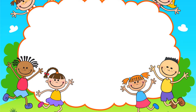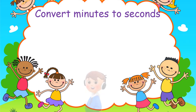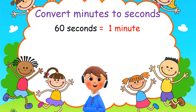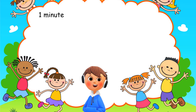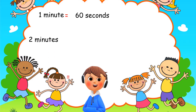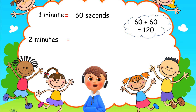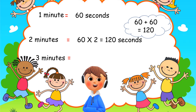Now let's look at converting minutes to seconds. We know that 60 seconds equals one minute — there are 60 seconds in one minute. So to convert minutes to seconds, we also multiply by 60. One minute equals 60 seconds, so two minutes would equal 60 plus 60, which is 120, or 60 multiplied by 2 equals 120 seconds. Three minutes equals 60 multiplied by 3, which gives us 180 seconds.